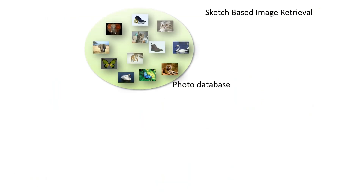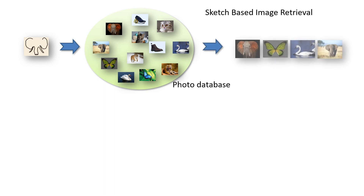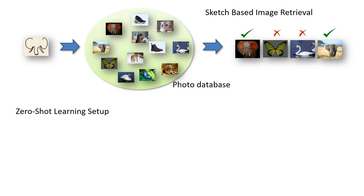In Sketch-Based Image Retrieval, we aim to retrieve the appropriate images from a database of photos which are closest to the input query sketch. However, sketches are notoriously difficult to collect. A practical scenario for application of SBIR is a zero-shot paradigm, which examines the data scarcity issue from a category transfer perspective.